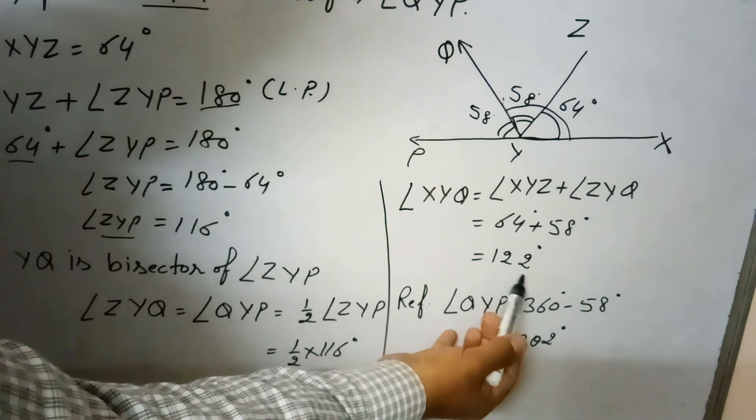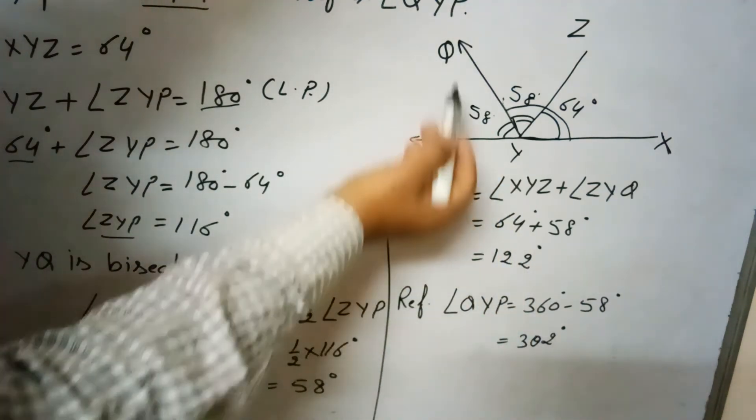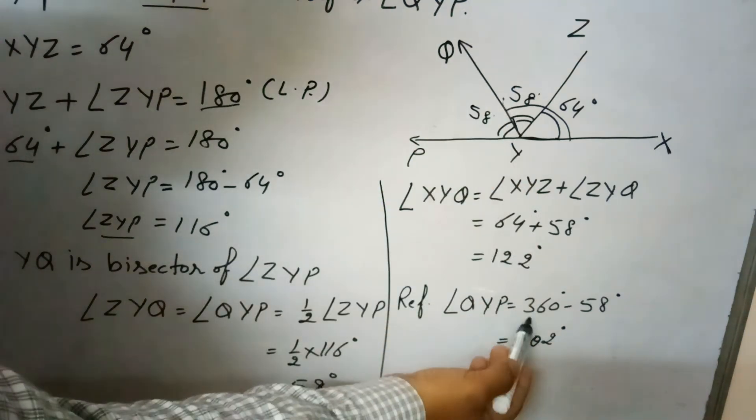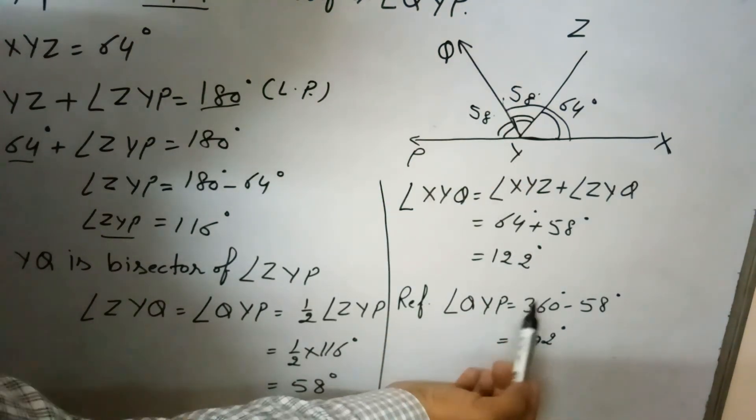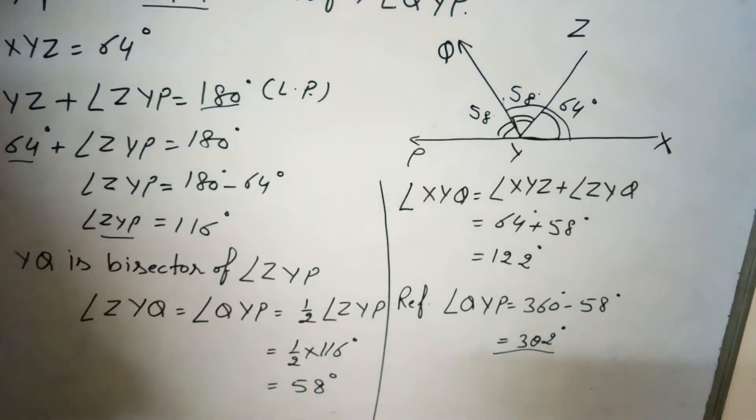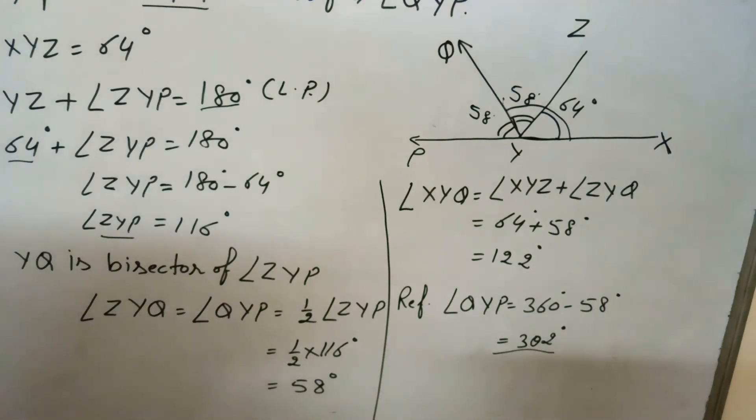And reflex angle QYP can be calculated by subtracting from 360 degrees. So this is 360 minus 58 equals 302 degrees. So these are the measures of these two angles. Thank you.